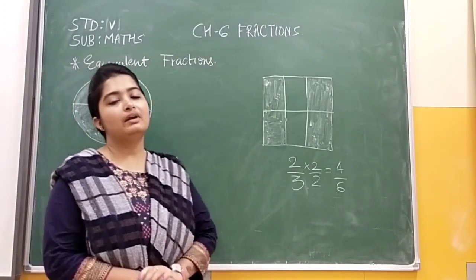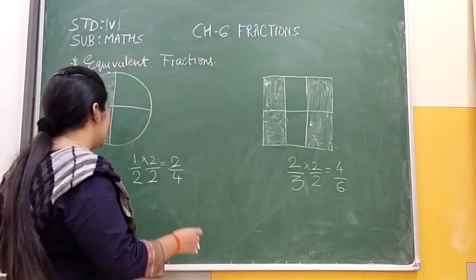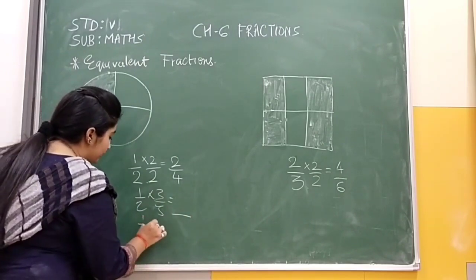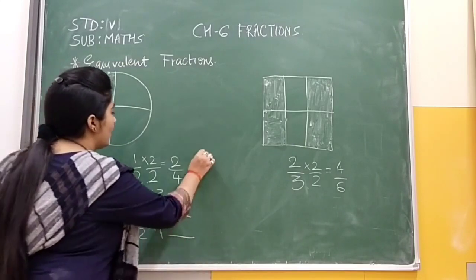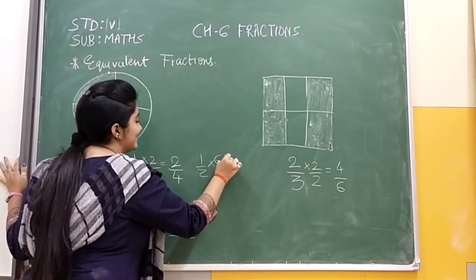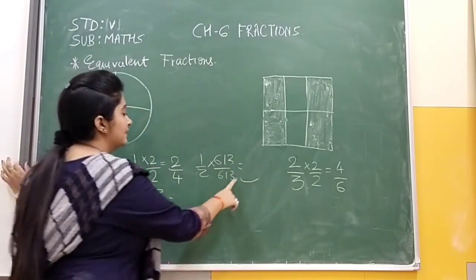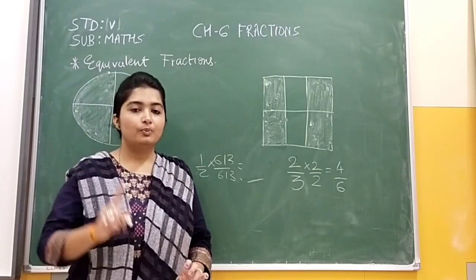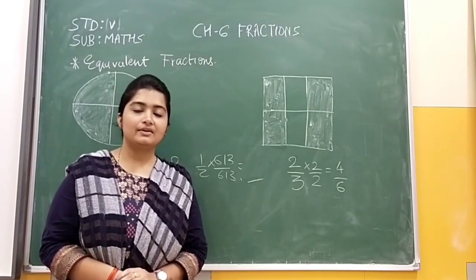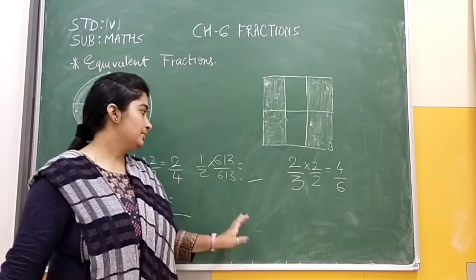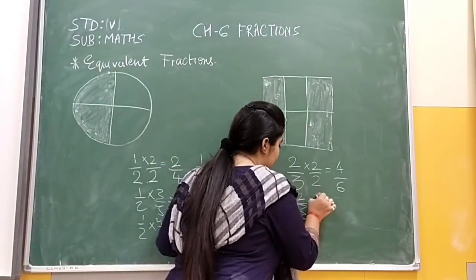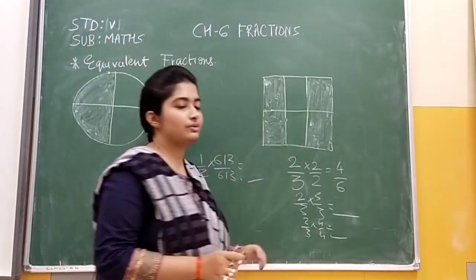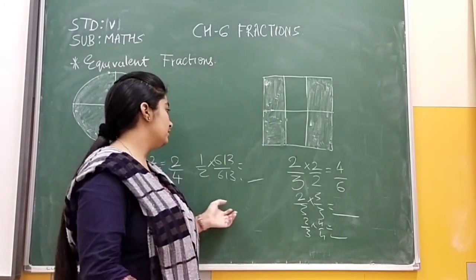We can get infinite equivalent fractions of any number. If I multiply one upon two by three upon three, that is an equivalent fraction. One upon two multiplied by four upon four is also an equivalent fraction. One upon two multiplied by three upon three gives three upon six — that is also an equivalent fraction. Any number you multiply by, the condition is that the same number must be multiplied on both top and bottom. We have discussed equivalent fractions using multiplication.